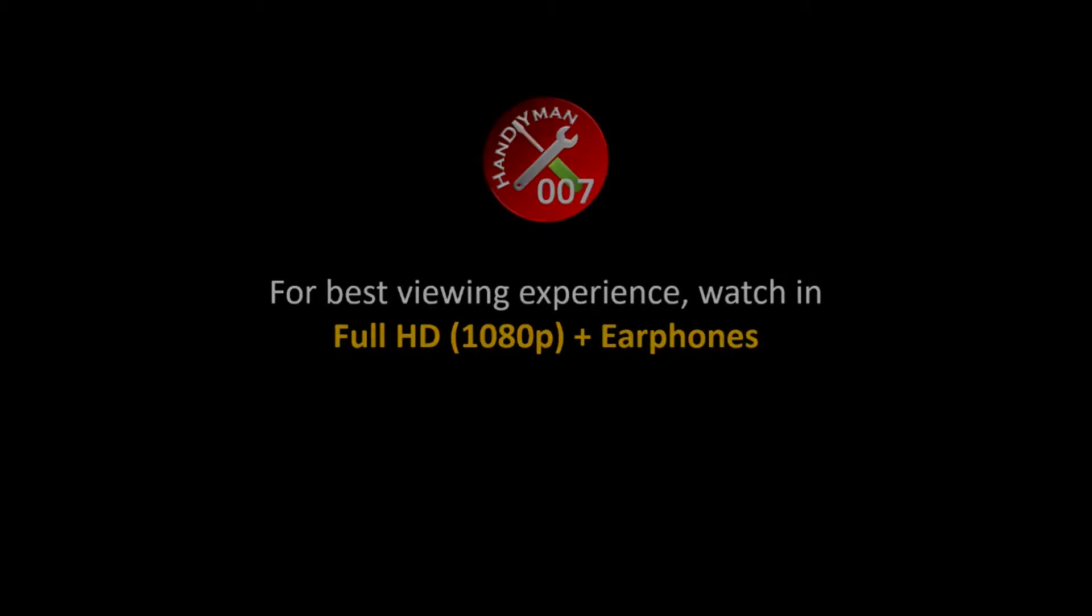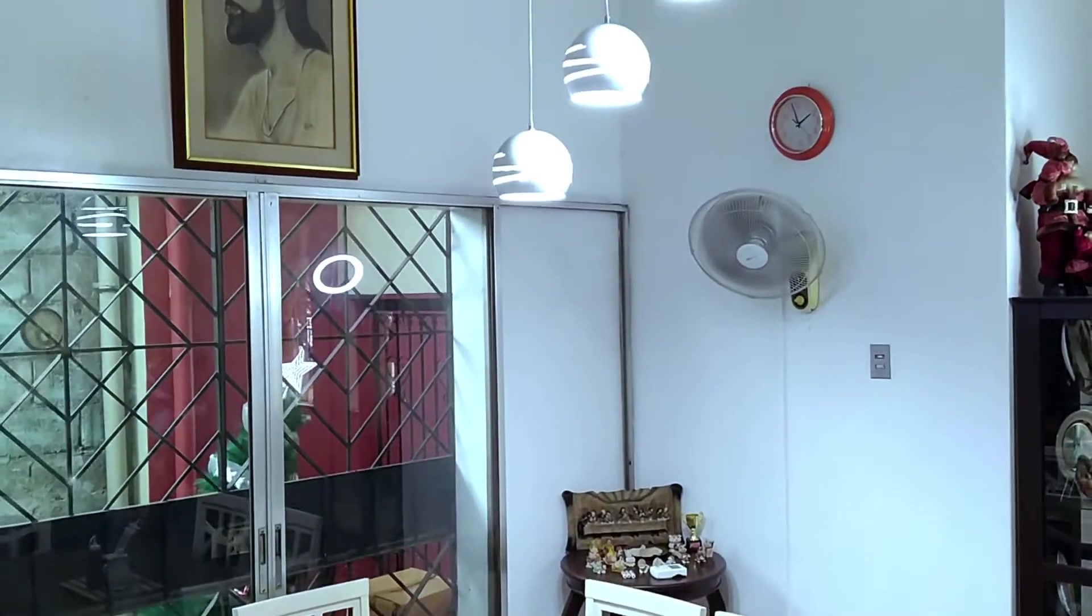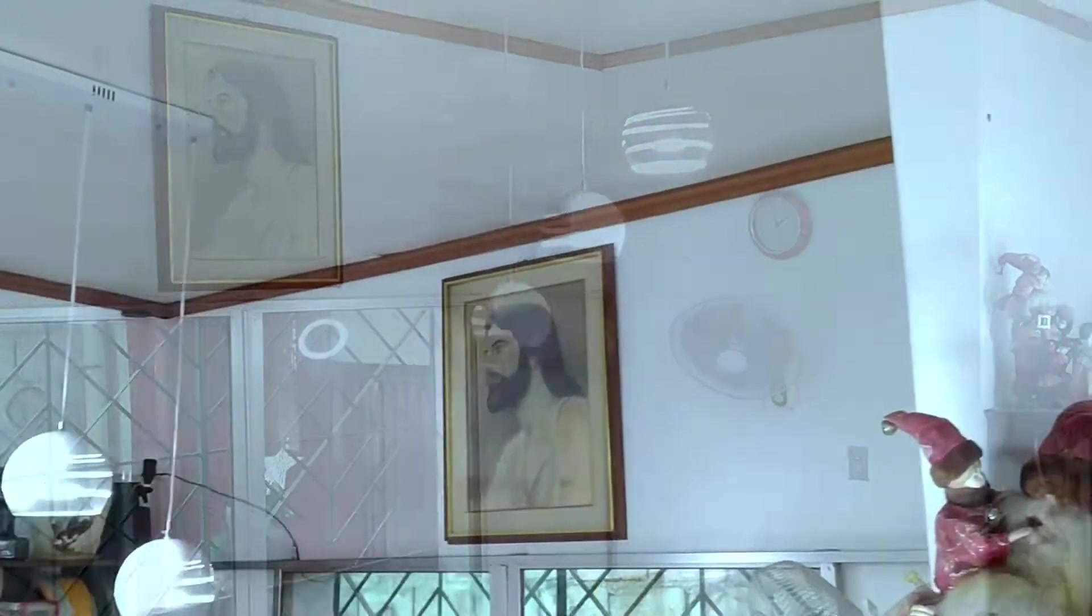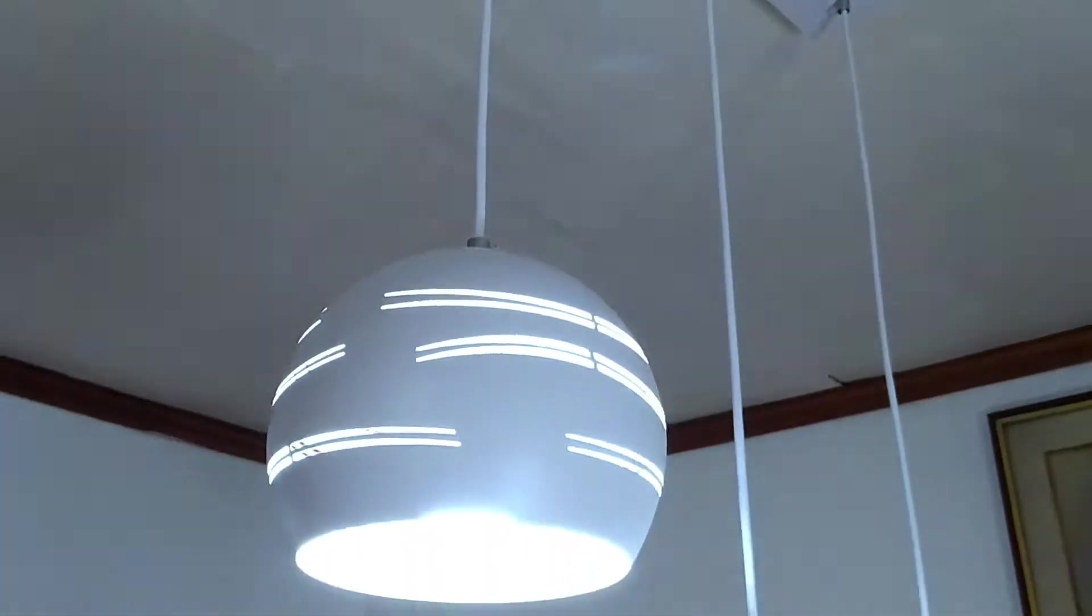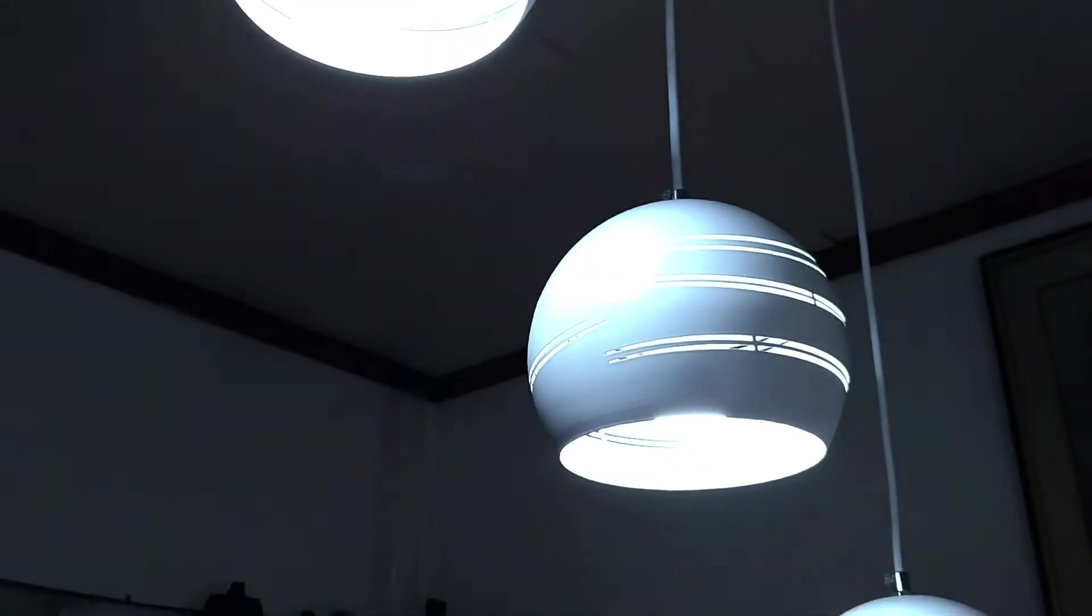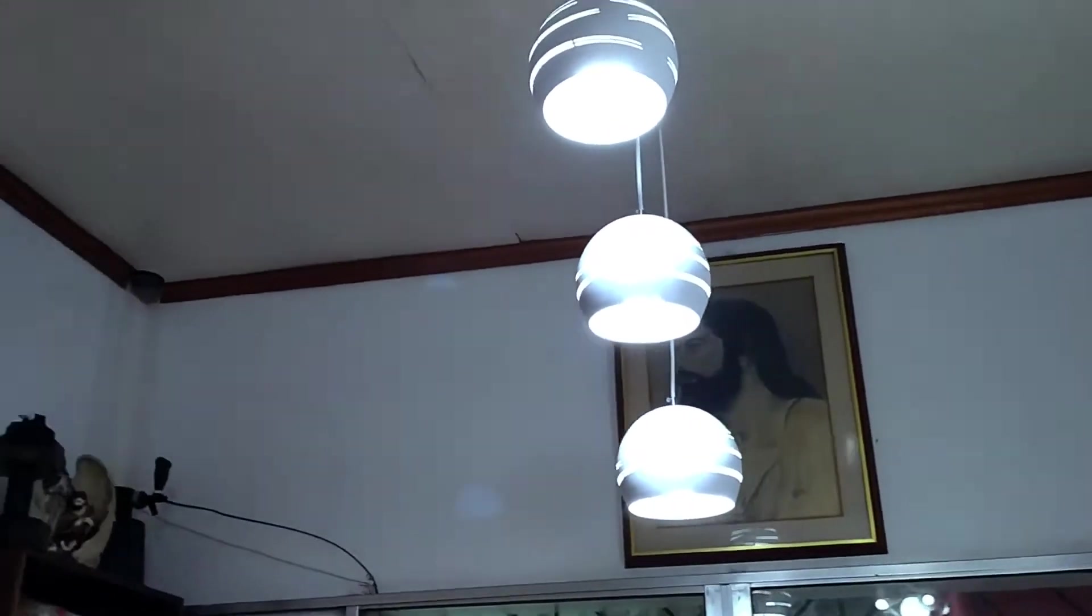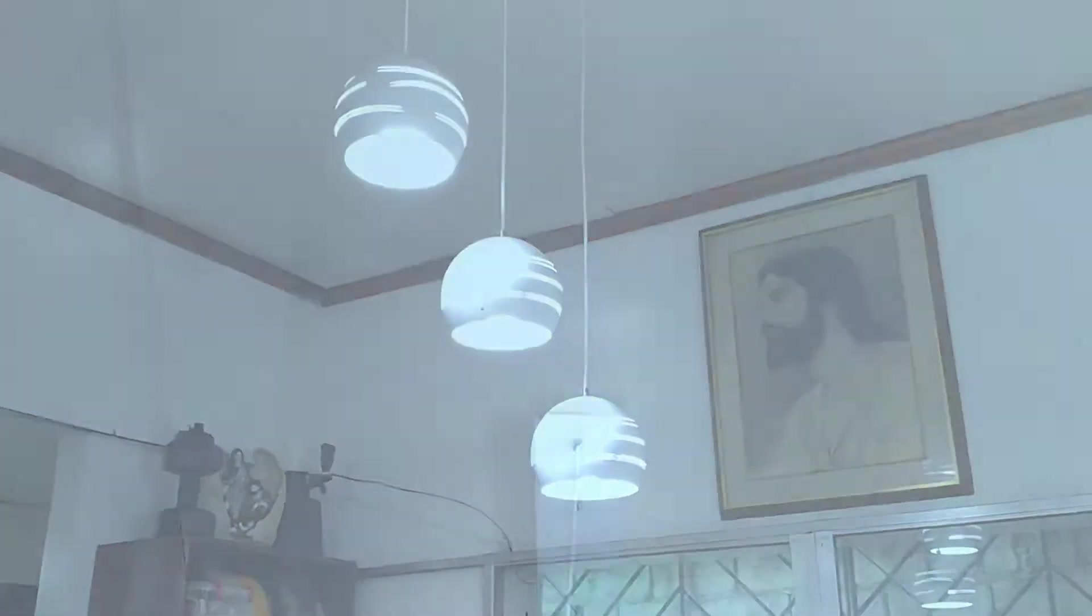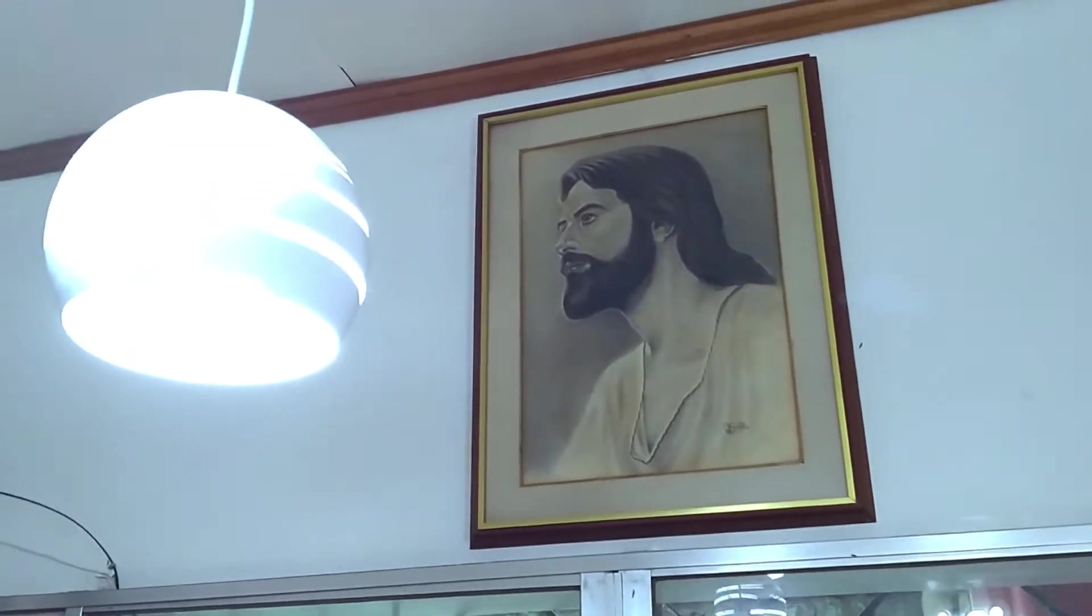Hey there, this is Handyman007, and in this video I'm going to show you how I installed this modern design chandelier in our dining room. Now this isn't your average lighting installation since, as you can see, the chandelier holds not one, not two, but three light bulbs. So the question now becomes: how do we connect the wirings from this fixture to the wirings coming from the ceiling, where everything is controlled by a single light switch?